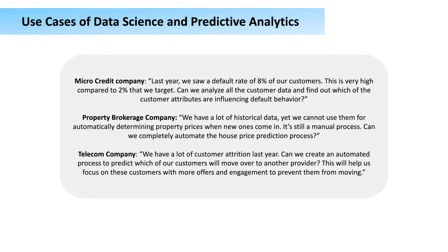For a property brokerage firm that has sold thousands of properties, they currently use a manual process where someone evaluates many parameters to estimate a property's value. That entire manual process can be automated because we can use historical data — number of bedrooms, balconies, toilets, garages, square footage, etc. — to automatically predict property prices. This is a linear regression project we are going to do to solve this problem.